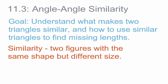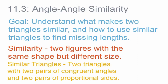Taking that a step further, we can further define similar figures: similar triangles are two triangles with two pairs of congruent angles, which will lead to having two pairs of proportional sides. We'll be using that in this lesson to help us find the missing side length. But to start, we're just going to look at some triangles to determine if they are in fact similar or not.